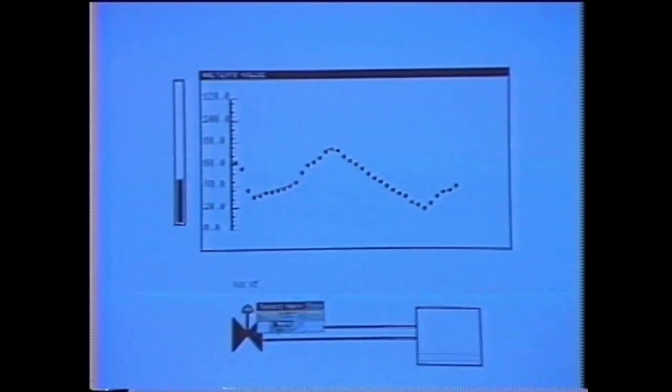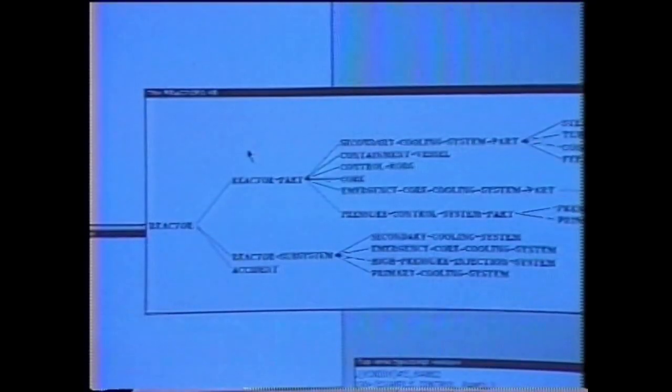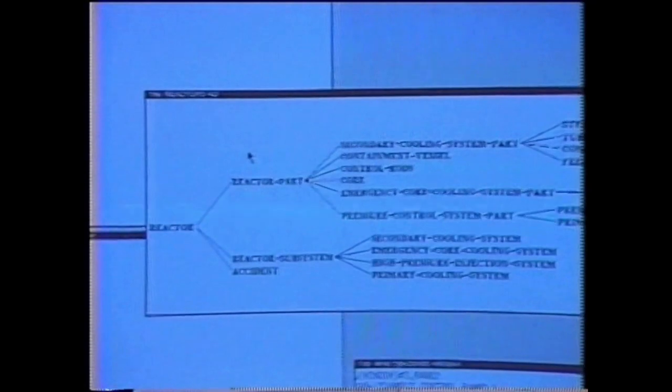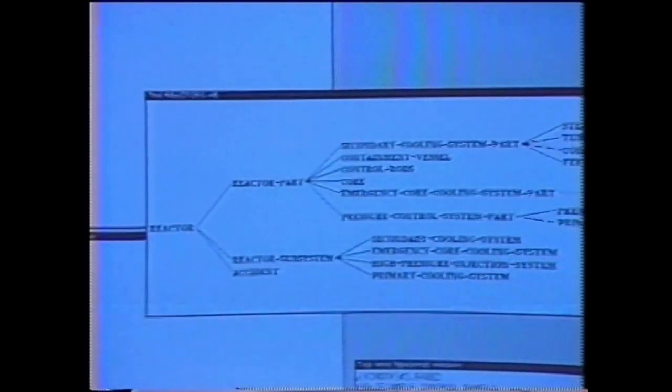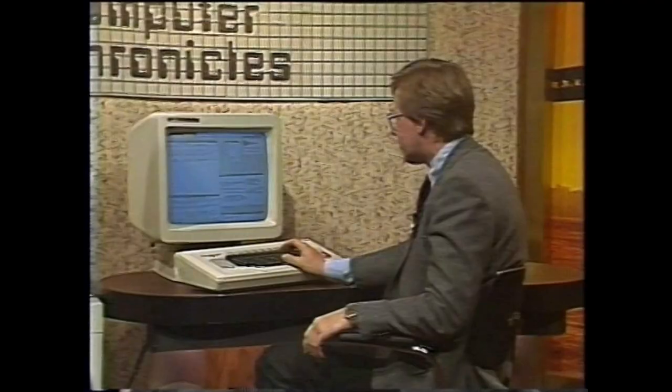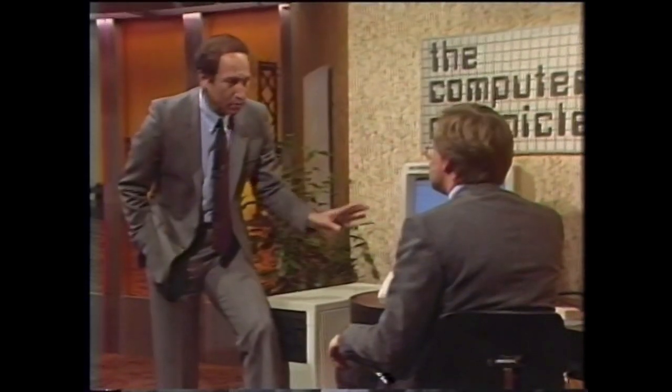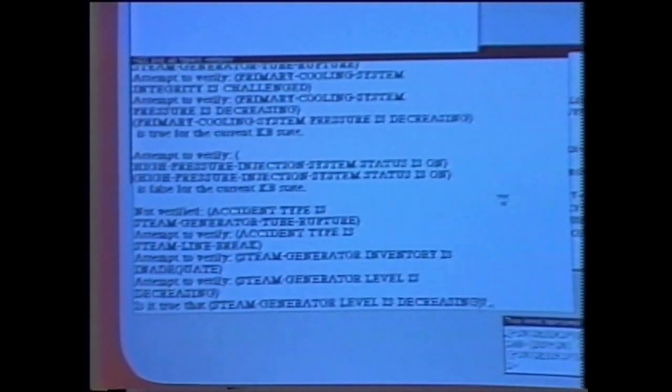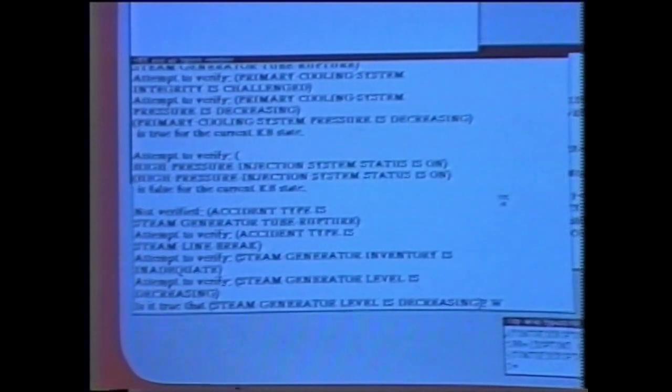Another thing we can do with these kinds of panels is look at valves and affect whether a valve is open or shut. What's important about this is that it's affecting an underlying knowledge base which will then apply heuristics and decision-making procedures to the system. What we see underneath here is a knowledge base for a nuclear reactor — a representation of its components as well as the decision-making behavior carried out by the expert. You can interrogate the system and ask it what course of logic it is following. Right now it's asked the operator: is it true that the steam generator level is decreasing? We can ask why, and it will explain that it's doing so in order to prove that the steam generator inventory is inadequate.